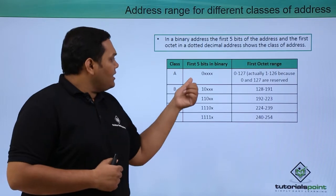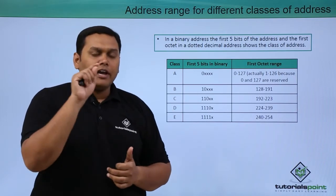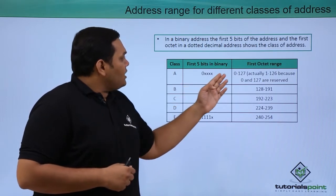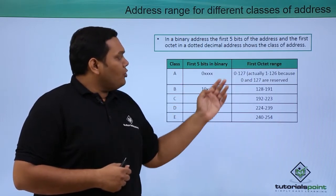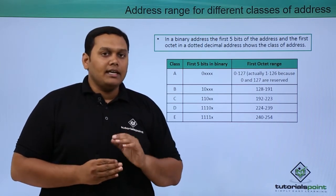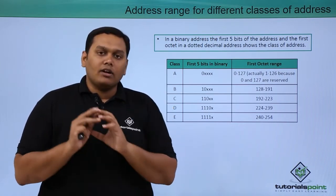For class A, it is a fixed value of 0 for the first bit. So that gives the octet range from 0 to 127, but it is actually from 1 to 126 because 0 and 127 are already reserved.